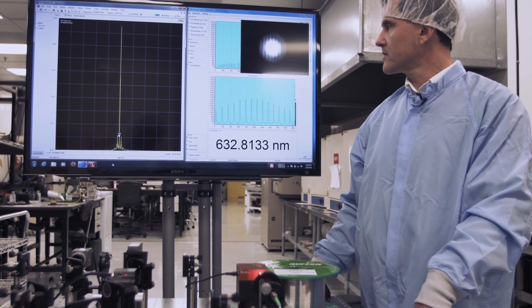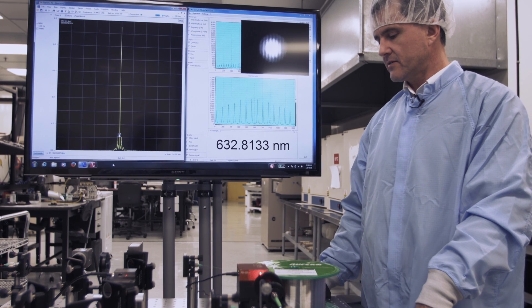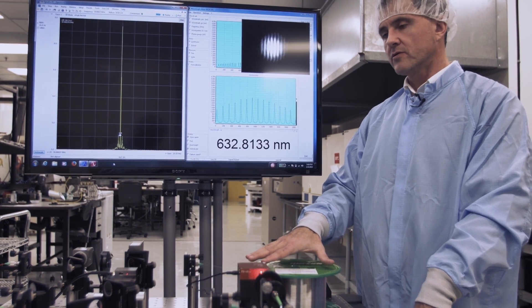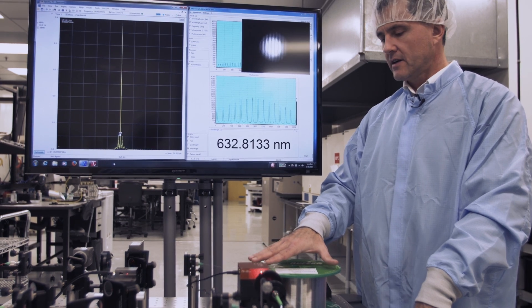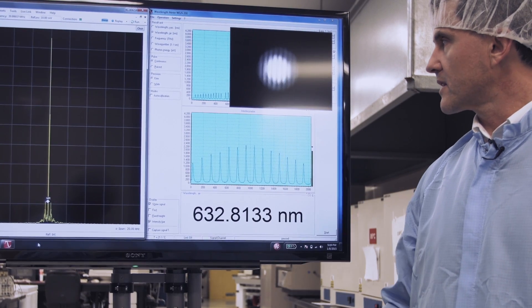The interference signal is shown live here in this window, and even after passing through a kilometer of fiber, which corresponds to about a kilometer and a half path difference, the fringe pattern is clearly visible.